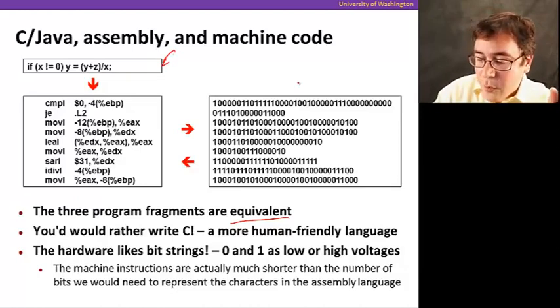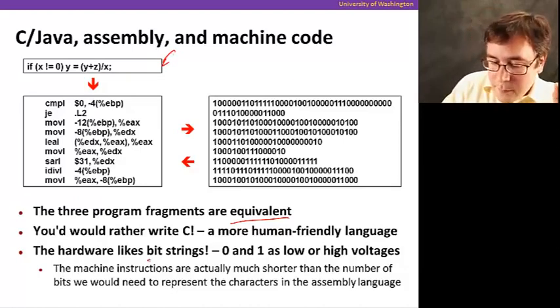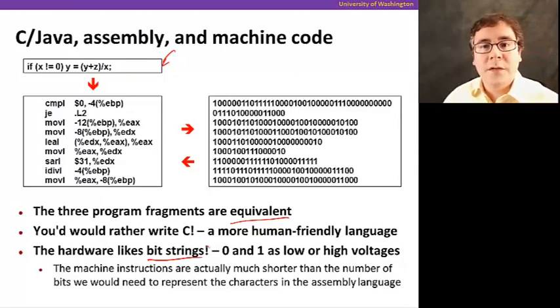But as I said before, the hardware likes bit strings. So zeros and ones. So a digital computer likes zeros and ones because it's very easy to represent with electronic circuits because zero is a low voltage and one can be represented as a high voltage.